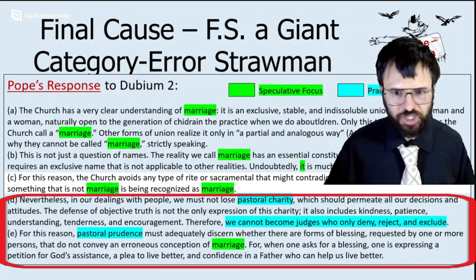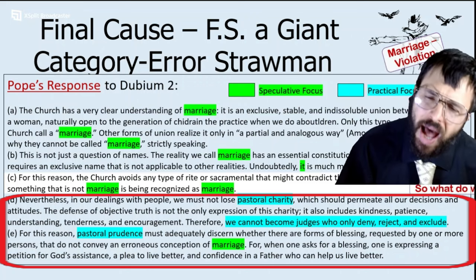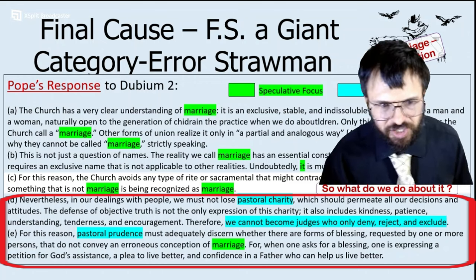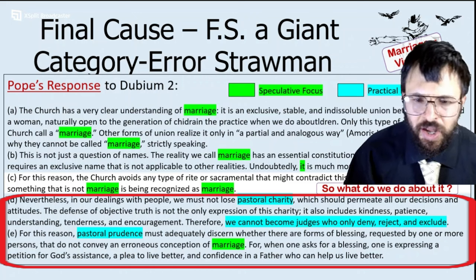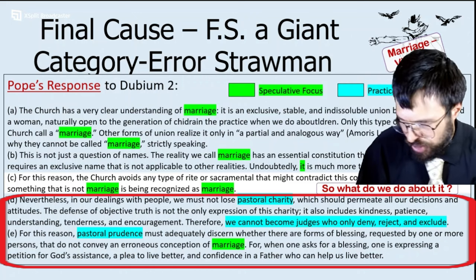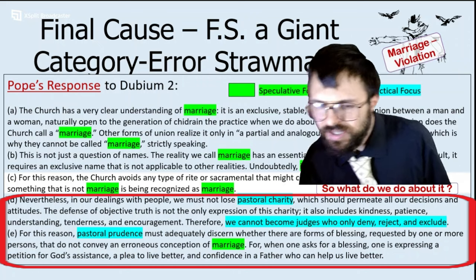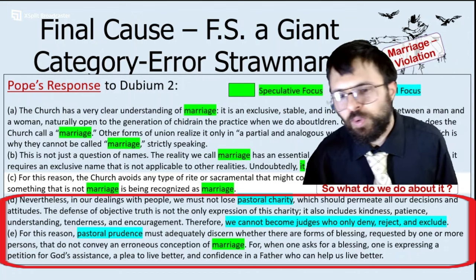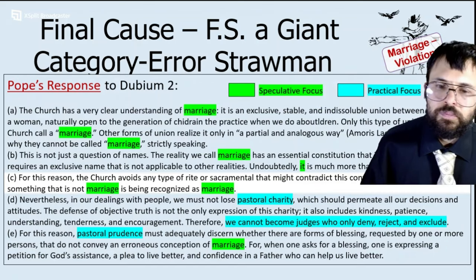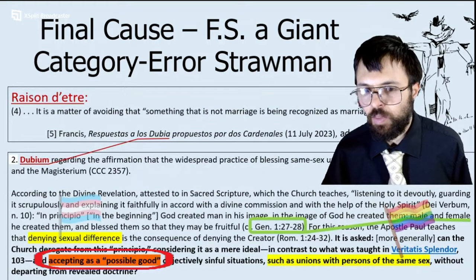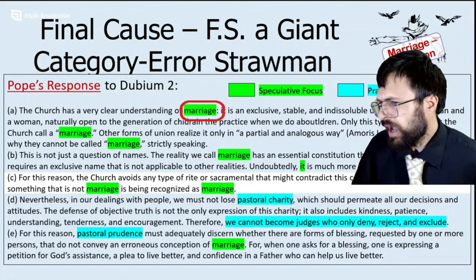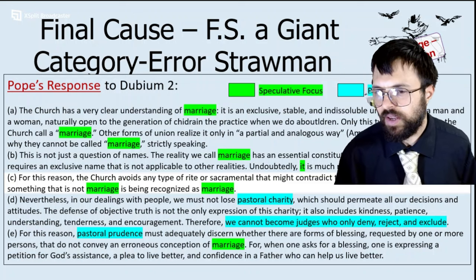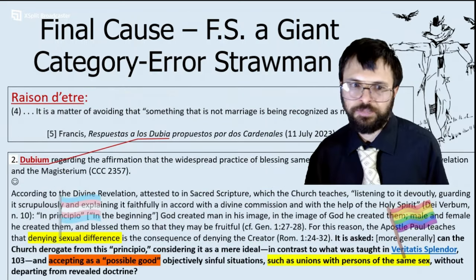'Nevertheless, in our dealings with people, we must not lose pastoral charity. We should permeate all our decisions and attitudes: kindness, patience, understanding, encouragement. We cannot become judges who only deny, reject, and exclude. For this reason, pastoral prudence must adequately discern whether there are forms of blessing which don't convey an erroneous conception of marriage.' So you see what happened: we asked about whether it can be good at all, and he said, 'hmm, I might think of something that's not against marriage.' He responded about marriage, about not giving a false understanding of marriage, and about how to do it pastorally. So he was wrong when he said it's a matter of avoiding that something is not marriage being recognized as marriage — because we asked about Genesis 1, which makes it a human nature matter, not a marriage matter. It's not a matter of marriage violation, but goodness violation, Holy Spirit violation. Can we accept as good? And it's conscience violation too.